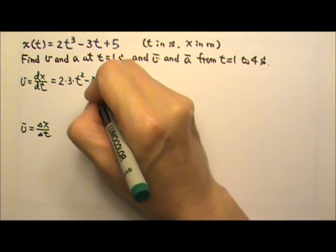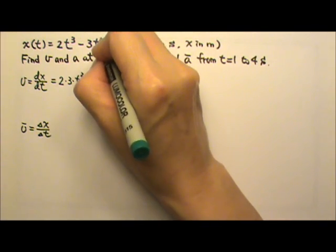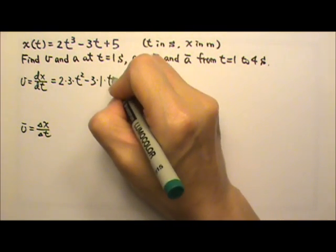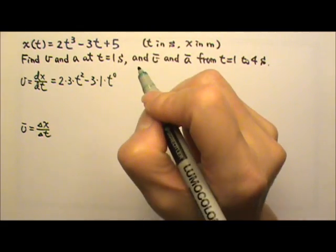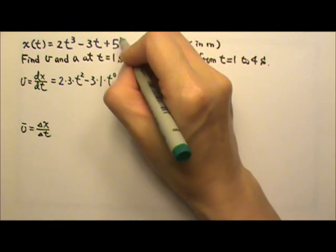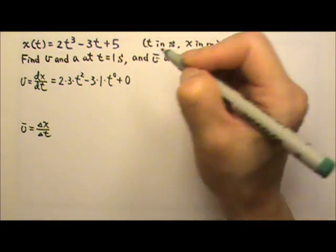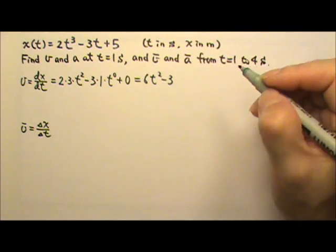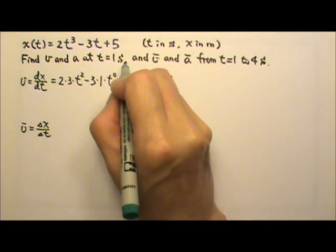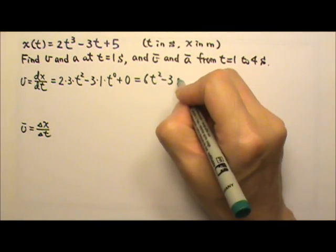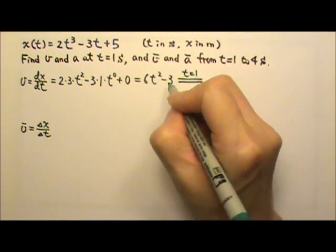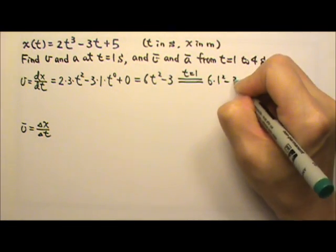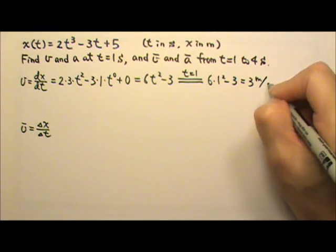Then minus the 3 stays, and this is t to the first degree, so we bring the 1 down and get t to the zero degree. When we take the derivative of the constant, we get 0. So this gives us 6t squared minus 3. We want the velocity at t equals 1, so we plug in t equals 1: 6 times 1 squared minus 3, which is 3 meters per second.